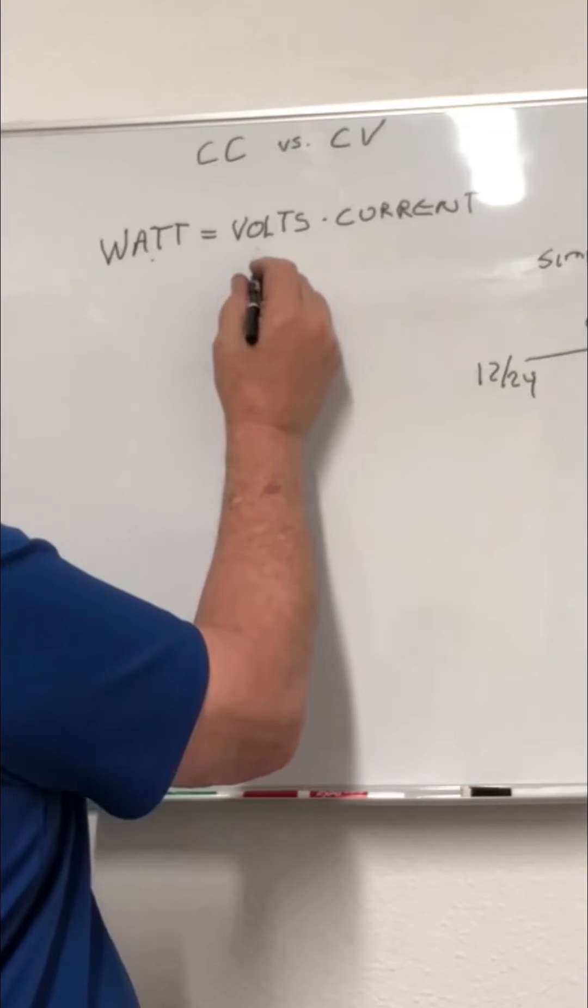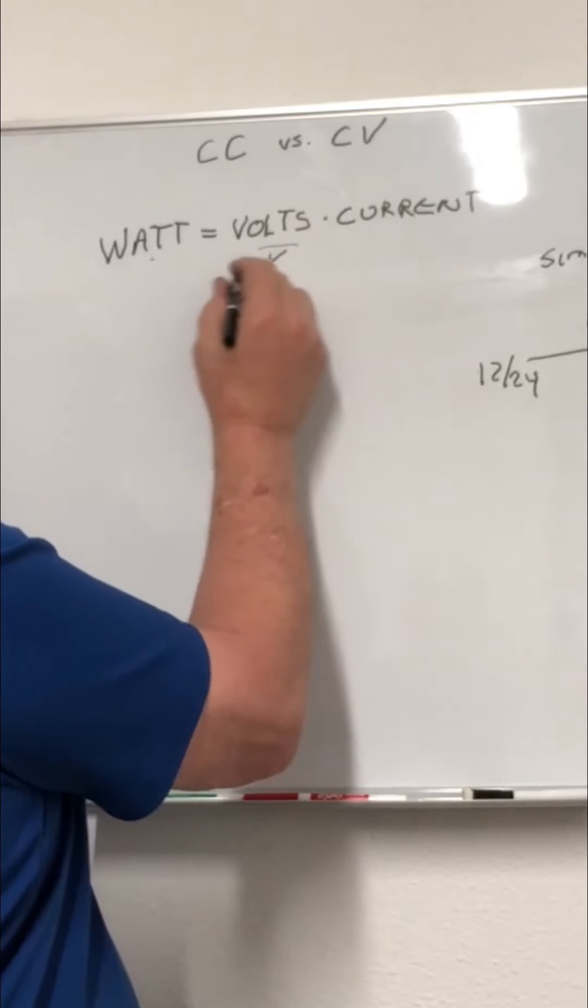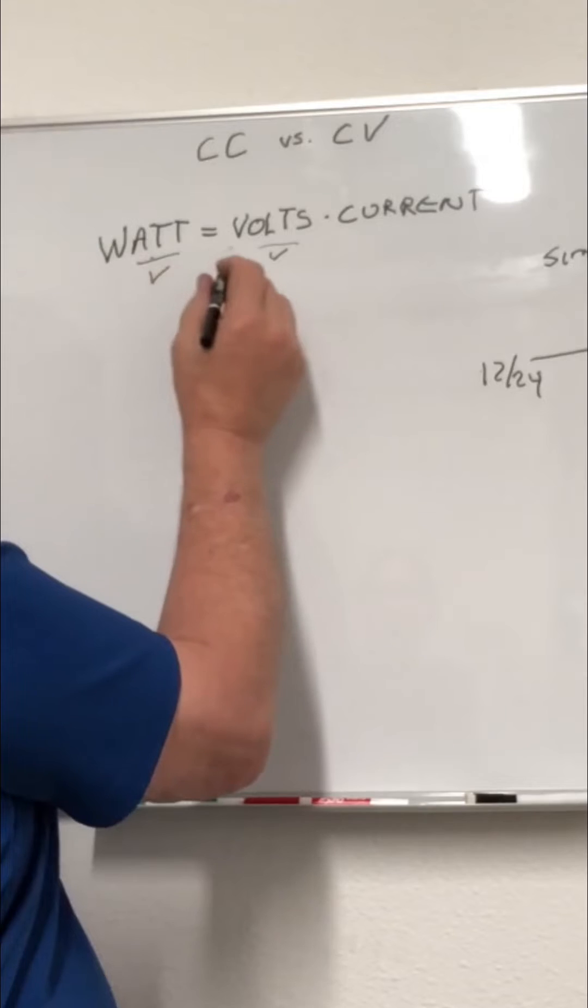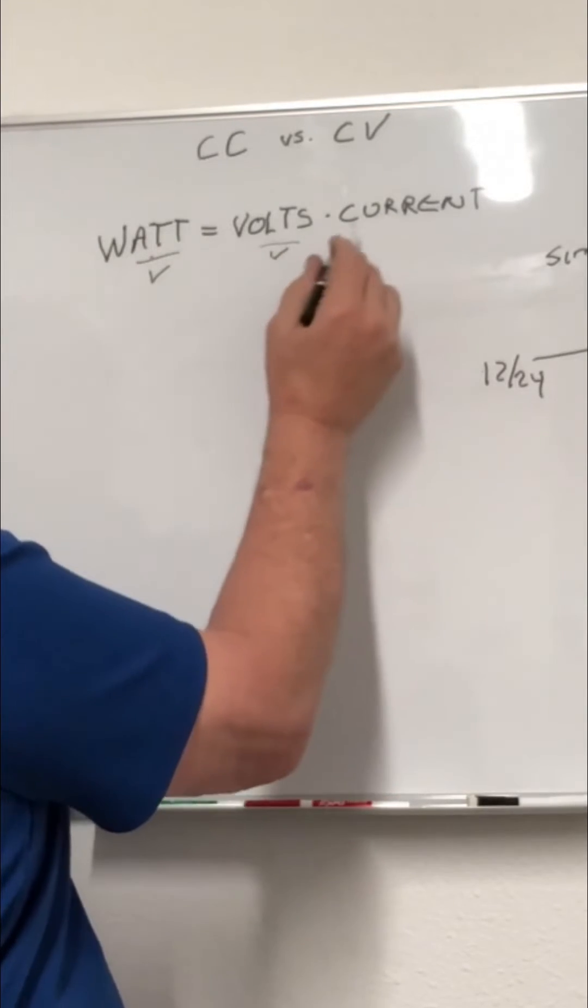So if you need to know the current, you would divide each side of the equation by volts, and that will give you the current.